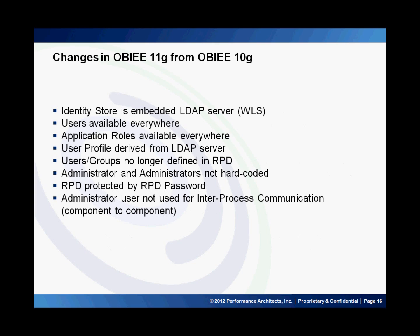These are the changes in OBI 11G. The Identity Store is an embedded LDAP server, and users are available everywhere. Application roles are available everywhere within a specific application. User profiles derived from the LDAP server can be used in the application — this is a new feature that is helpful when using the scheduler. For example, if you have an email ID as an attribute in the LDAP server, this information can be used by the scheduler to send iBots. Earlier, we had to store emails in OBI individual user accounts or use the SA system subject area, but now the scheduler can use the LDAP profile to send iBots to those emails.